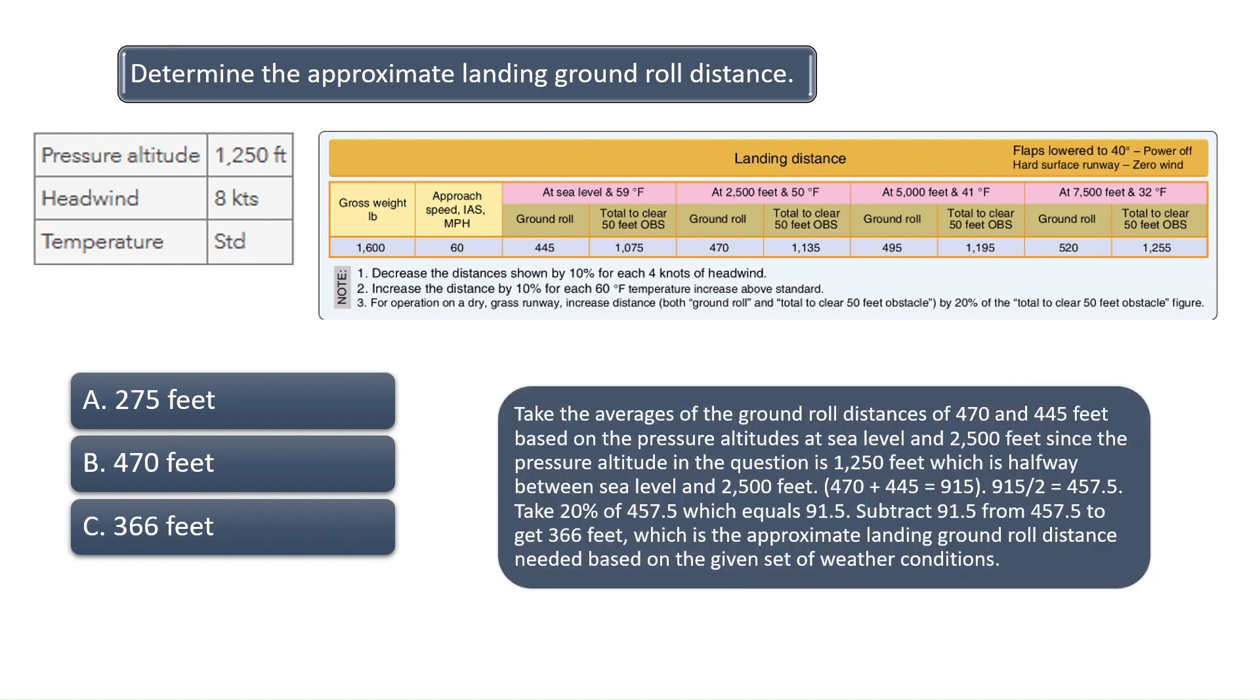Since the pressure altitude is 1,250 feet, which is between sea level and 2,500 feet, we need to take the averages of the ground roll distances at sea level and 2,500 feet. Add 470 to 445 to get 915, then divide by 2 to get the approximate landing ground roll distance at 1,250 feet, which is 457.5.